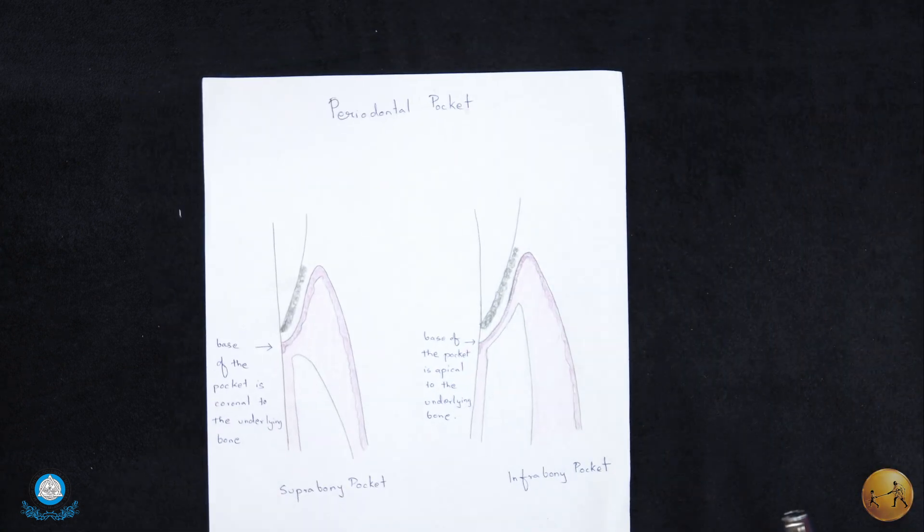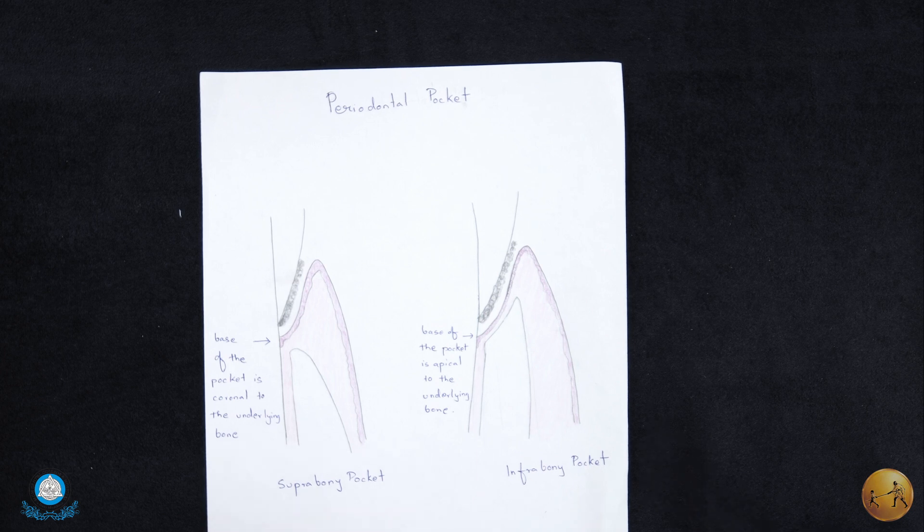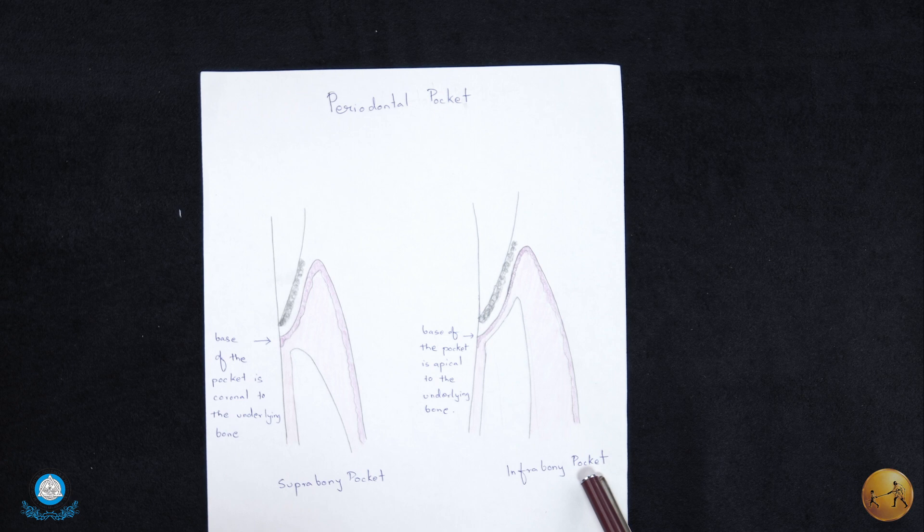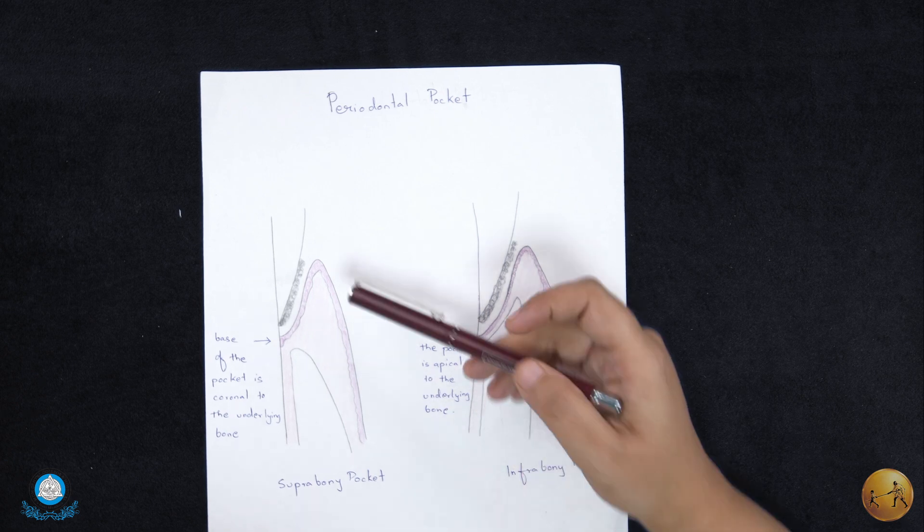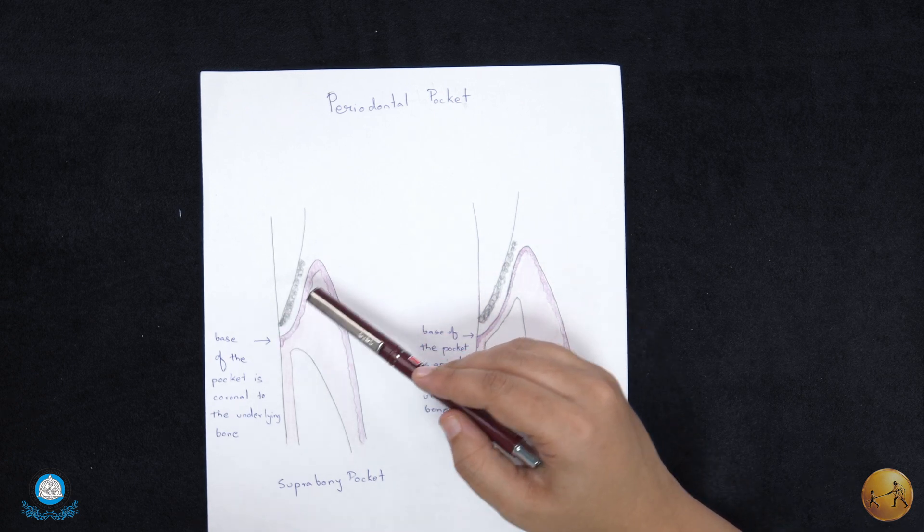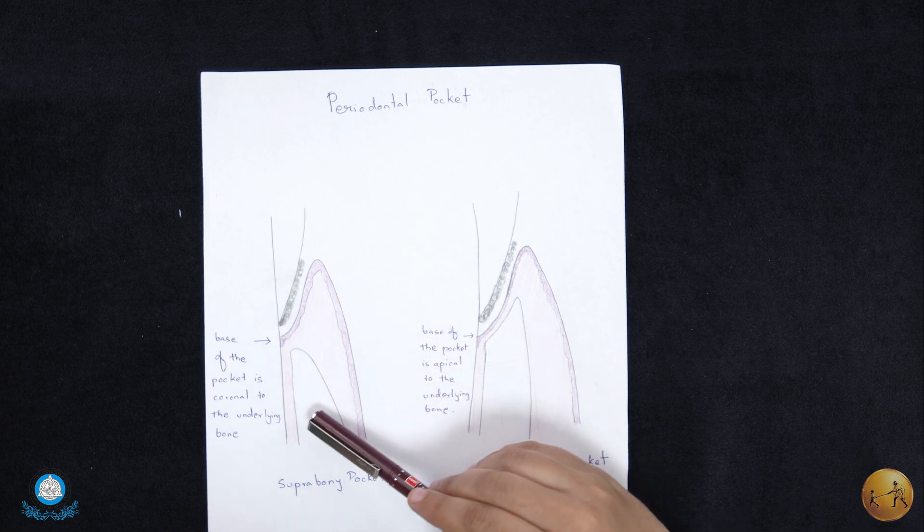Next we have periodontal pocket. Periodontal pocket can be classified into suprabony pocket or infrabony pocket depending upon the base of the pocket in relation to the bone.